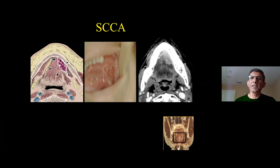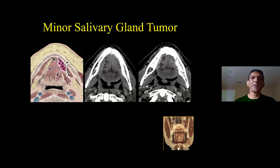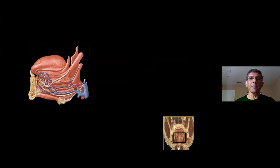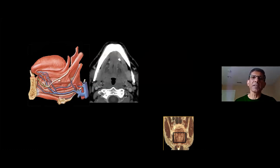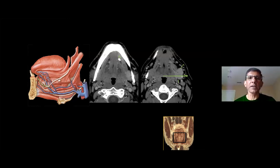The most common tumor in the floor of the mouth is squamous cell carcinoma. The second most common tumor is minor salivary gland — not lymphoma in this location. So for solid aggressive lesions: number one squamous cell carcinoma, number two minor salivary gland. Another common reason for CT: a sialolith involving the floor of the mouth at the level of the frenulum presenting as an apparent neck mass — this is just an obstructive submandibular gland from a stone causing obstructive sialoadenitis.